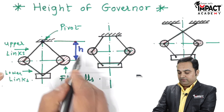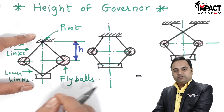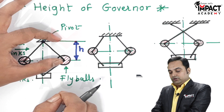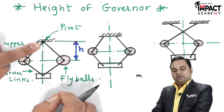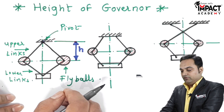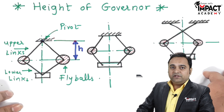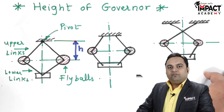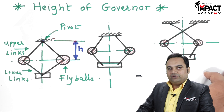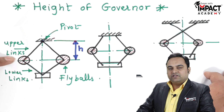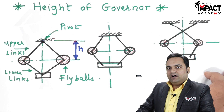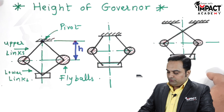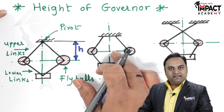That vertical distance gives us the height of the governor. It means the complete height is not the height of the governor, but rather the distance from the center of fly balls to the top point where the upper arms are getting intersected. This is being explained in terms of the simple Watt's governor. Even in case of the Potter governor or Proel governor, the height can be calculated in the same way. Only in case of the Hartnell governor does the definition of height of governor change.